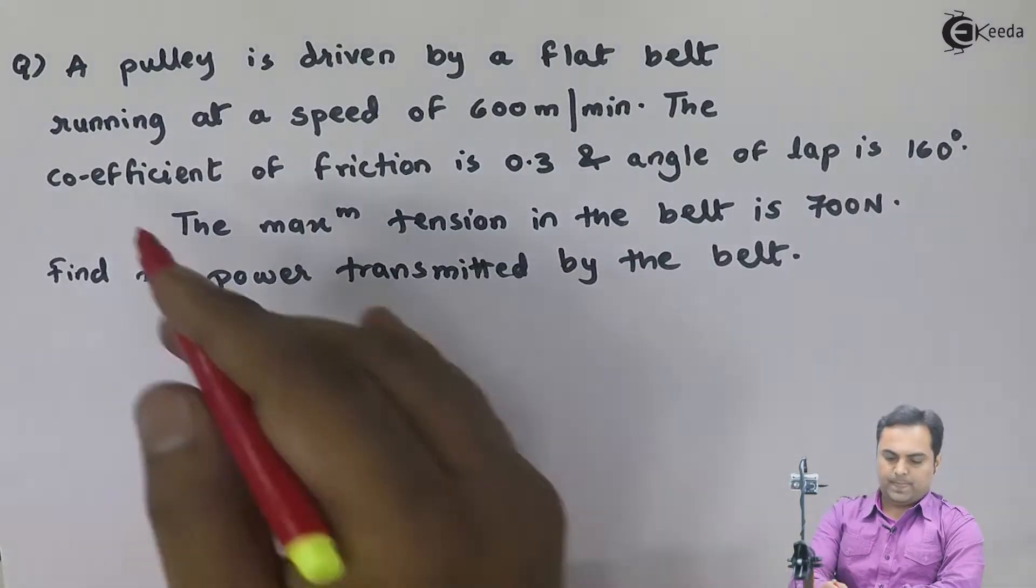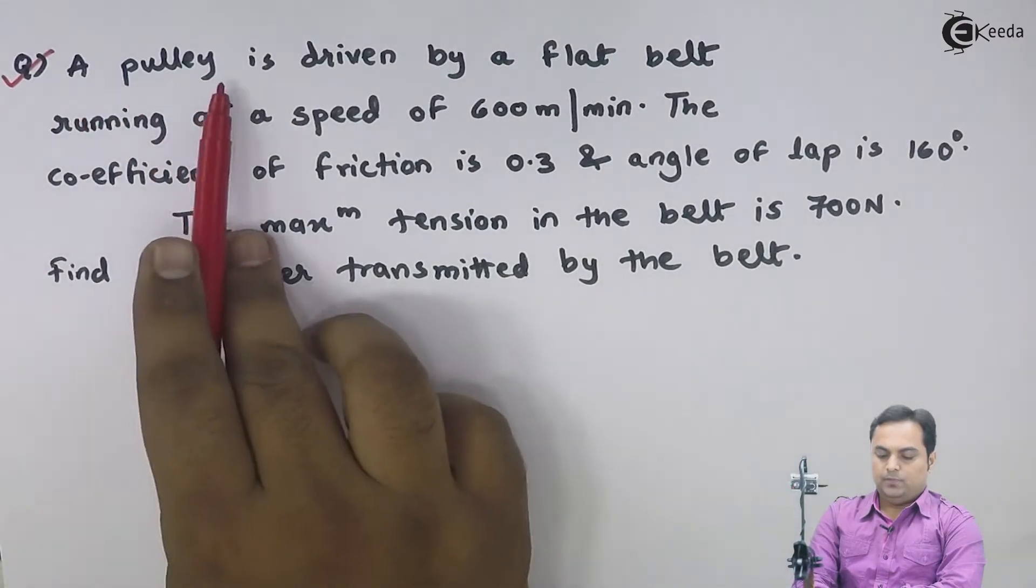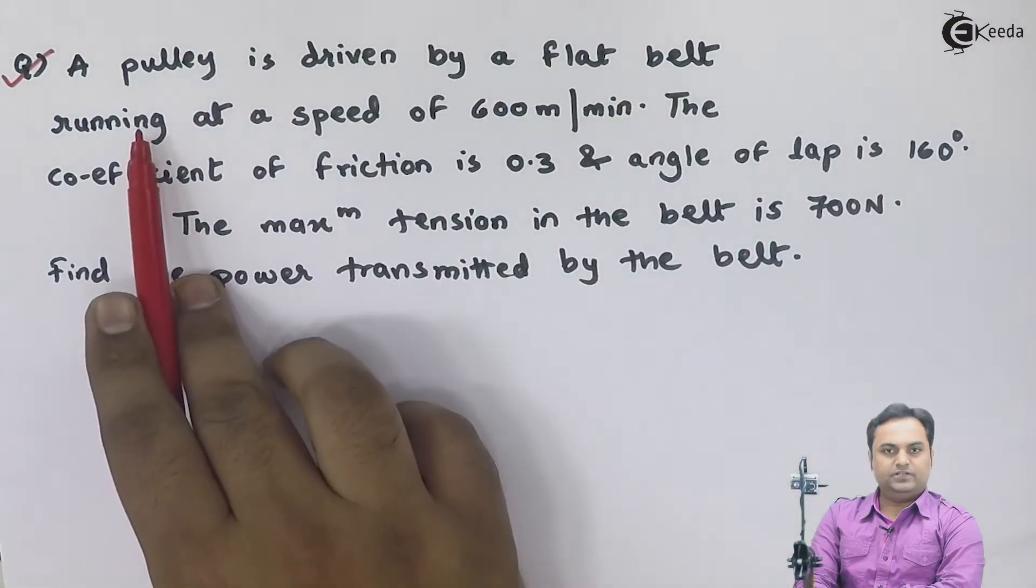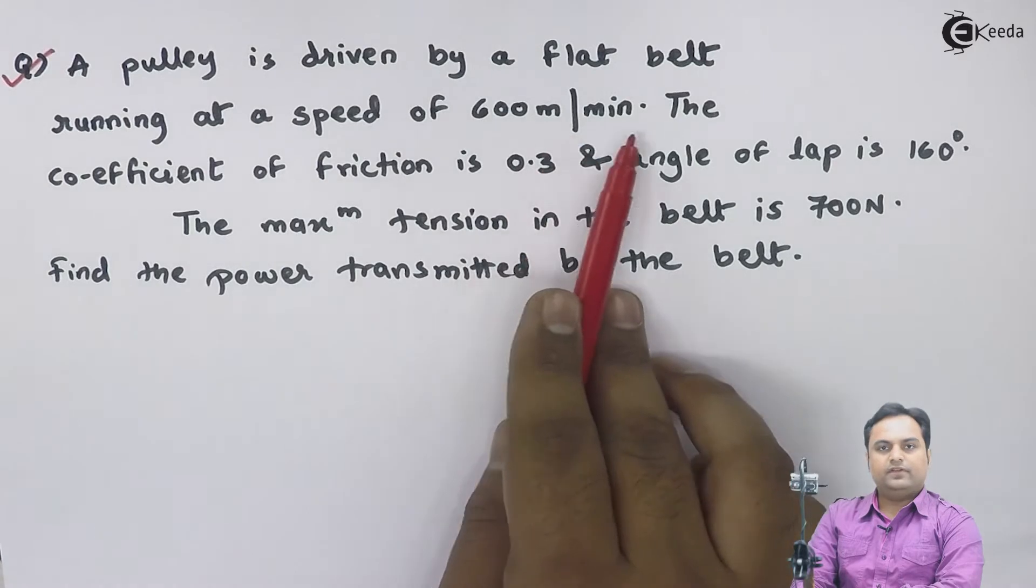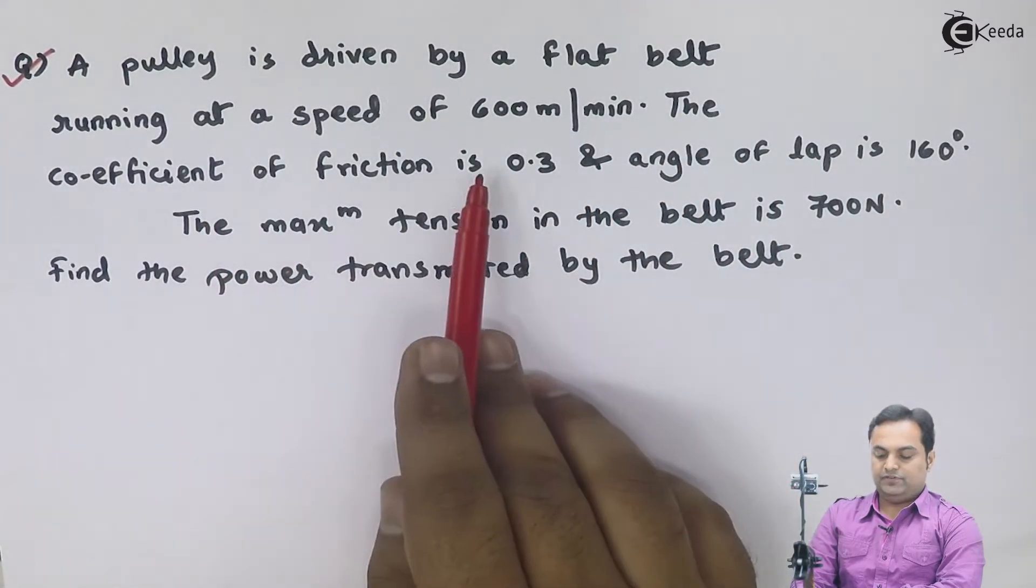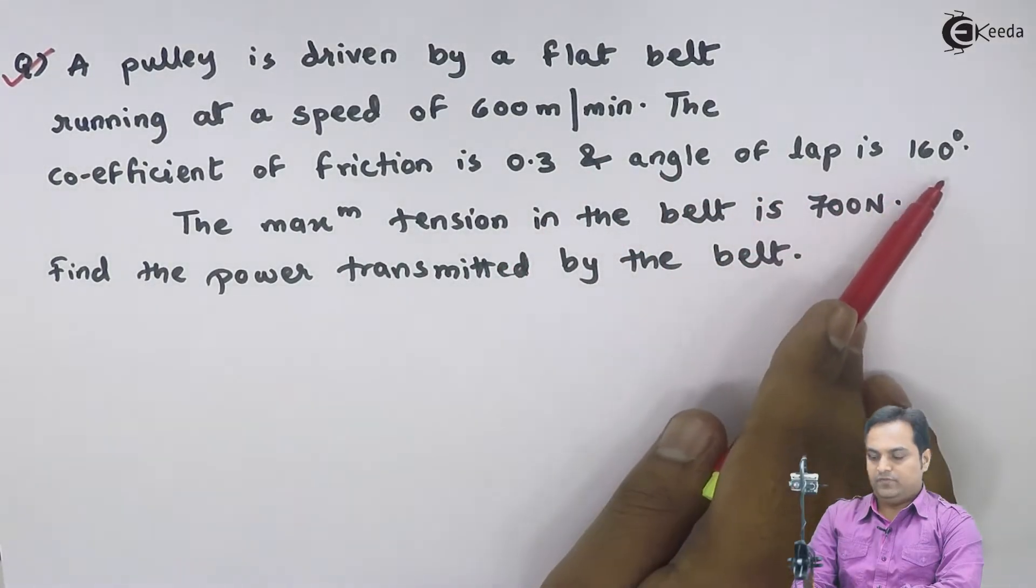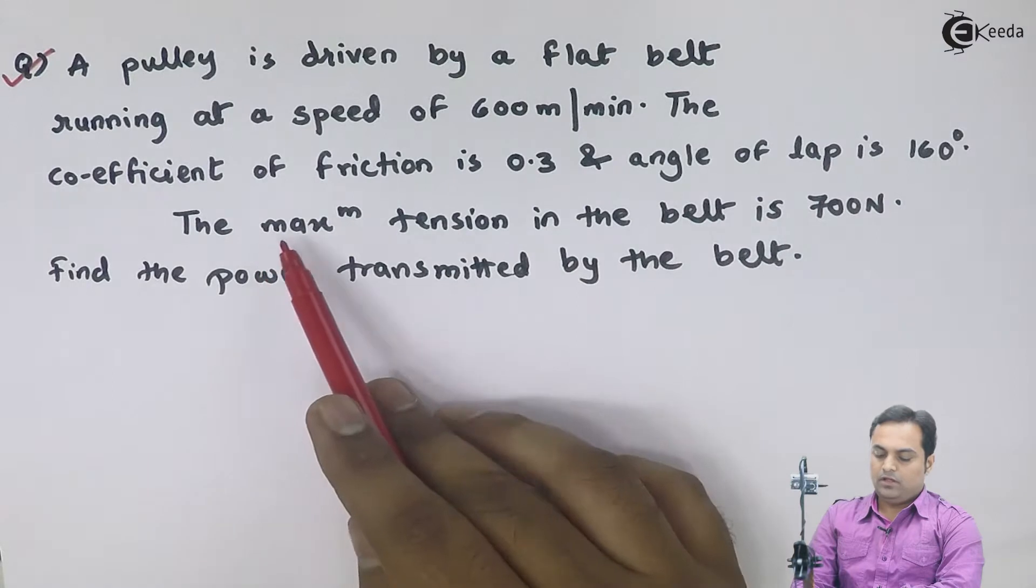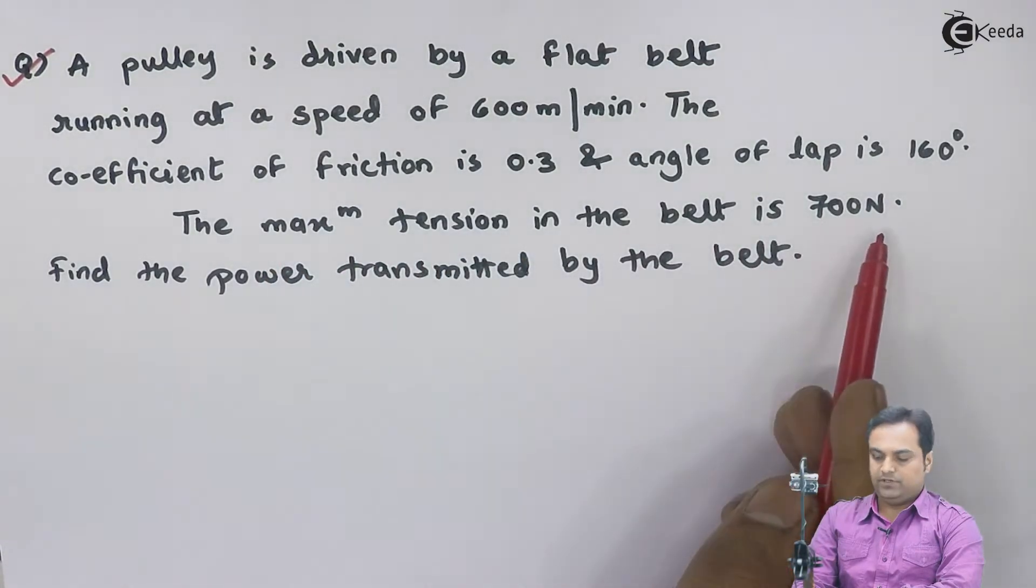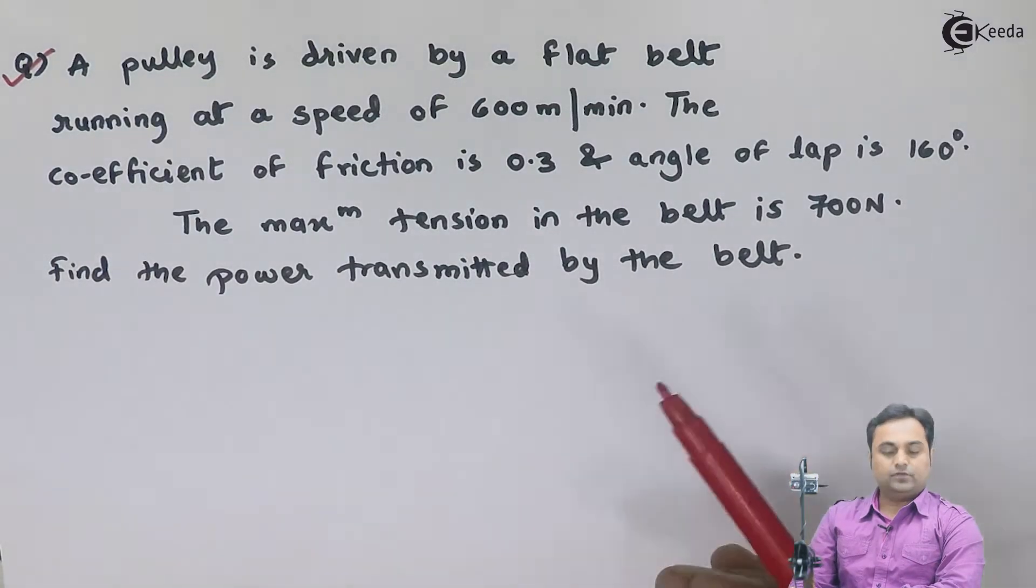Let us take the next question. I'll read what is given here. A pulley is driven by a flat belt running at a speed of 600 meters per minute. The coefficient of friction is 0.3 and angle of lap is 160 degrees. The maximum tension in the belt is 700 Newton. Find the power transmitted by the belt. This is the question.